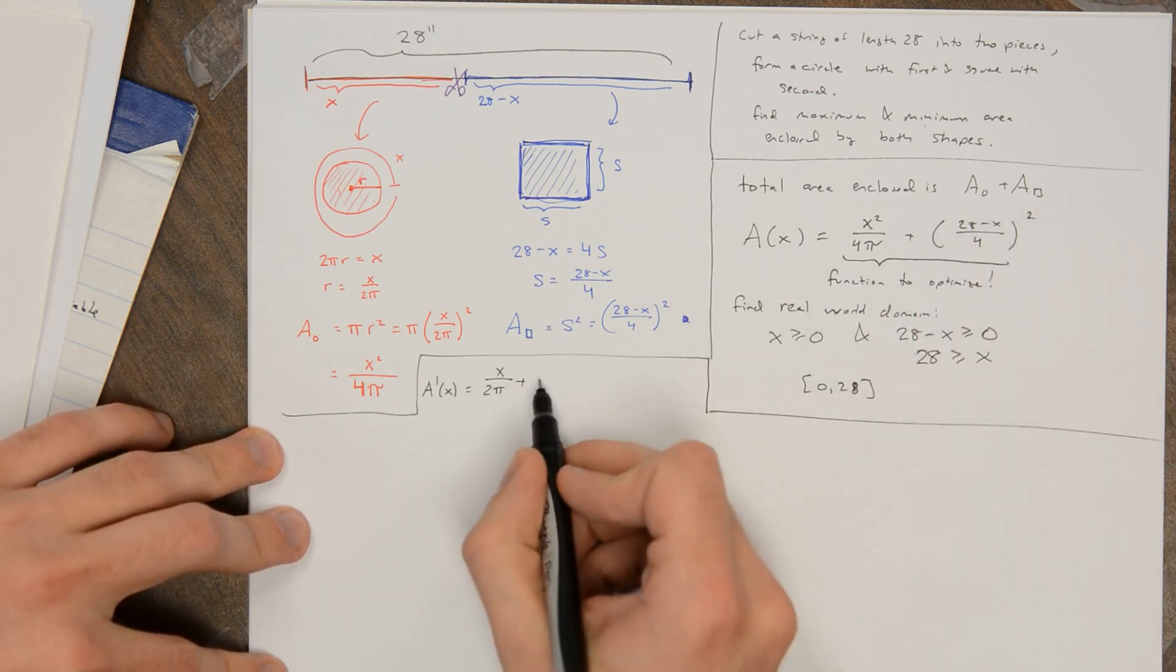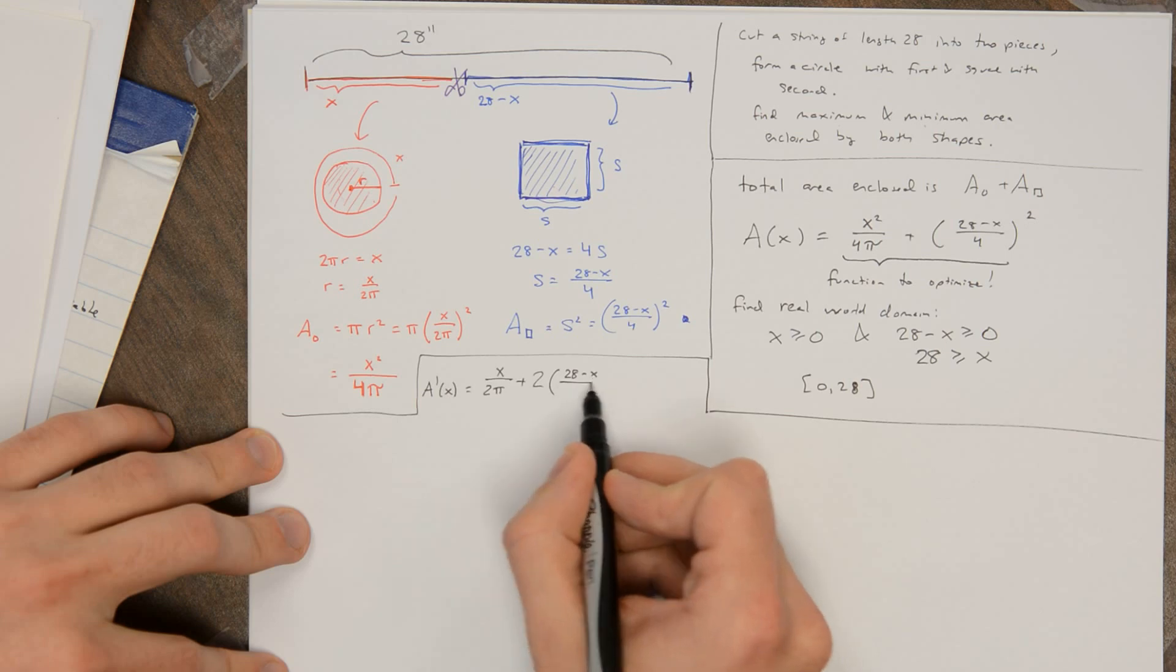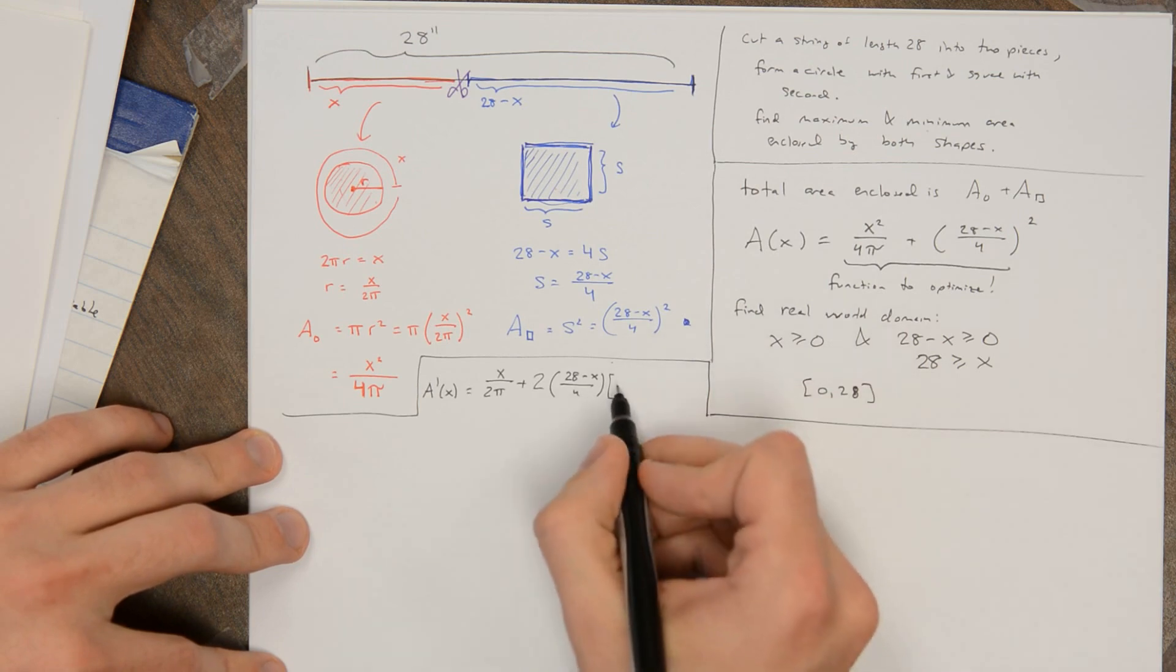Plus the derivative of this, which will be 2 times (28 - x)/4 to the first power, times the derivative of what's inside, which is minus 1/4.